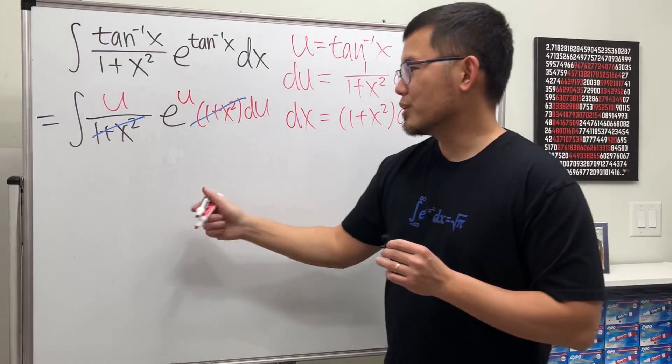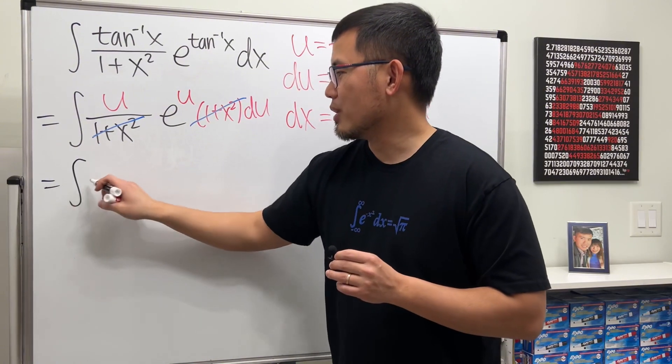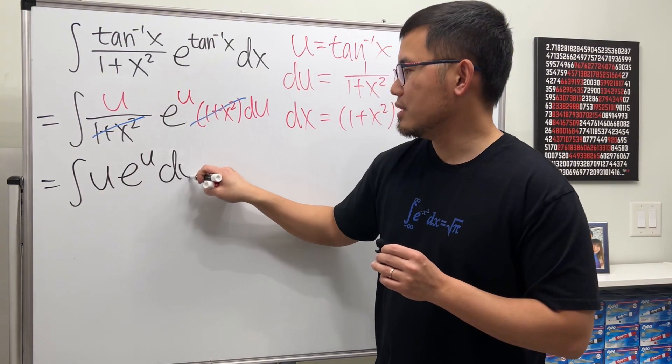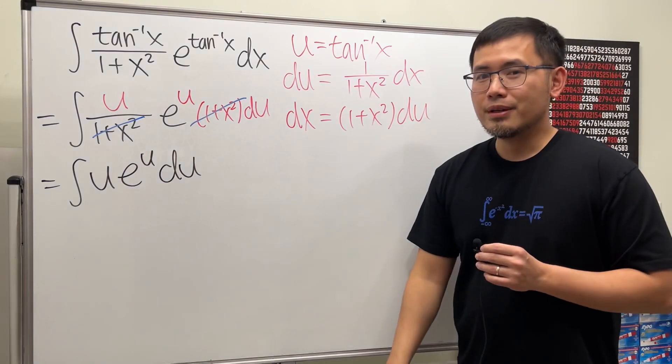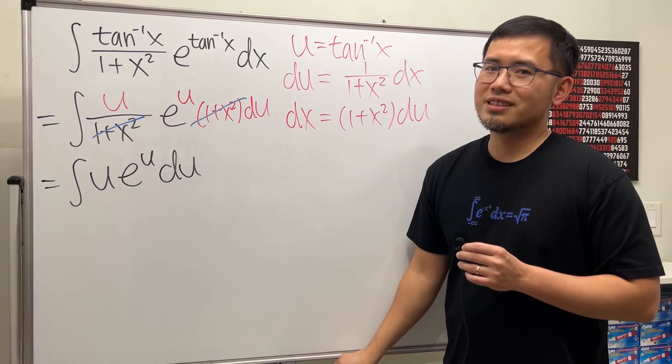And then the dx is this, which is 1 plus x squared and then du. As you can see, the 1 plus x squared they cancel very nicely. So we just look at the integral u e to the u du.